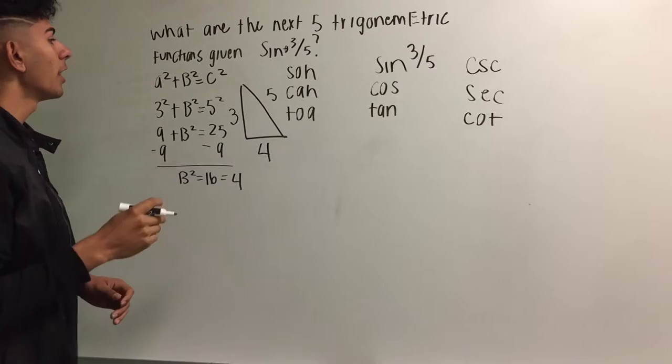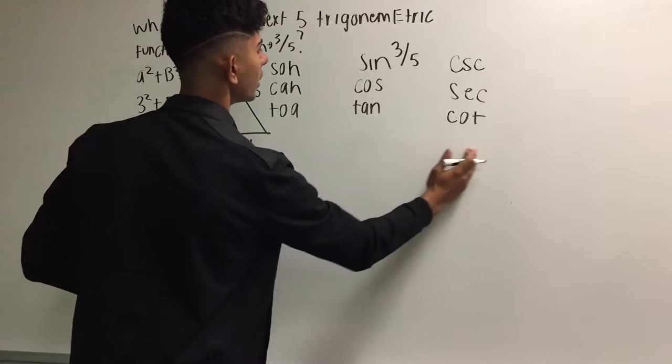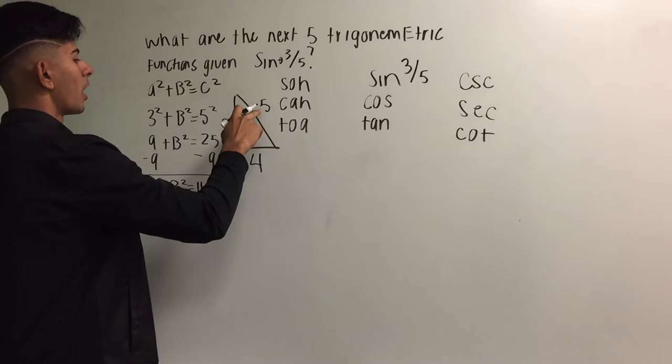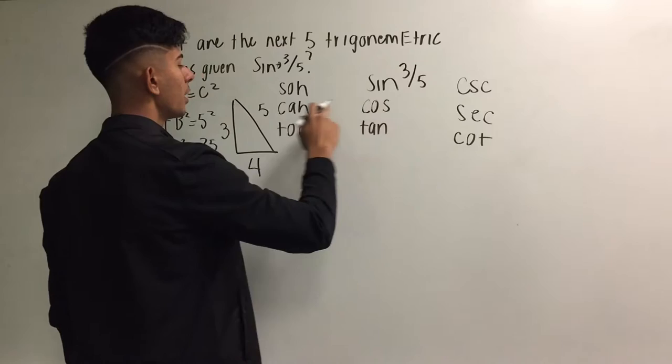Alright, now that we have our missing side done, we can now fill in the rest of the trigonometric functions. So we have, this is our hypotenuse again, this is our adjacent, and this is our opposite. For cosine, remember that we have SOHCAHTOA, so cosine would equal adjacent over hypotenuse. So our adjacent is 4 over 5.